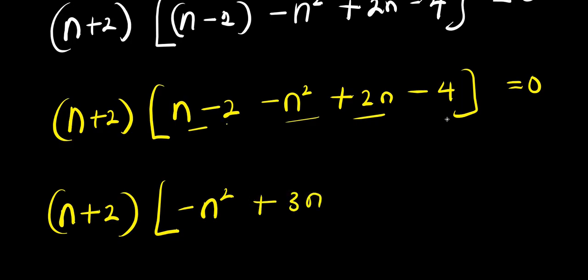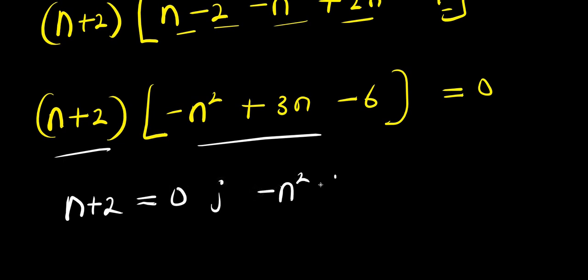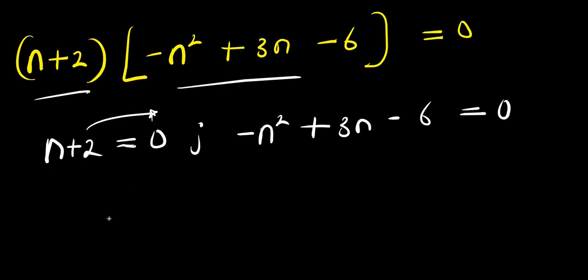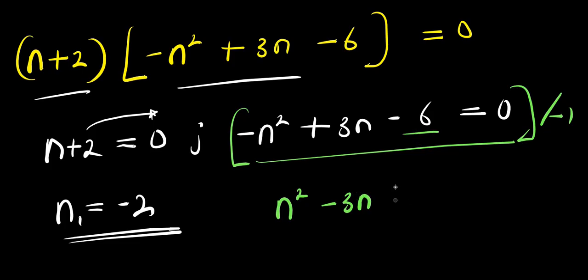Simplifying inside the bracket: n minus 2 plus 2n minus 4 gives 3n minus 6, so we have minus n squared plus 3n minus 6 equals 0. We equate each factor to zero: n plus 2 equals 0 gives n equals negative 2, our first solution. For the quadratic, we divide each term by negative 1 to get n squared minus 3n plus 6 equals 0.